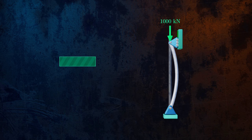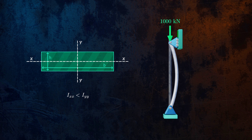If the cross section has a smaller area moment of inertia about a particular axis, the column will buckle in that direction, and the smaller value of I must be used to calculate the critical buckling load.